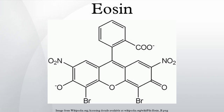Use in histology: eosin is most often used as a counterstain to hematoxylin in H&E staining, which is one of the most commonly used techniques in histology. Tissue stained with hematoxylin and eosin shows cytoplasm stained pink-orange and nuclei stained darkly, either blue or purple. Eosin also stains red blood cells intensely red.